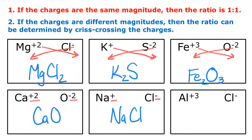Finally, I have aluminum, Al, with a plus three charge and chloride with a negative one charge. So I crisscross: Al gets one, and Cl gets three, giving AlCl3.